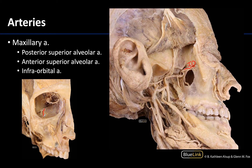In the infraorbital canal, the infraorbital artery gives off two branches. One is the anterior superior alveolar artery, visible where the bone has been opened in this region. It also gives off the middle superior alveolar artery, which is not visible in these images but will supply regions of the maxillary sinus as well as the canines and the lateral incisor. The infraorbital artery continues and exits the skull through the infraorbital foramen to supply the midface region — quite a complex and interesting route.